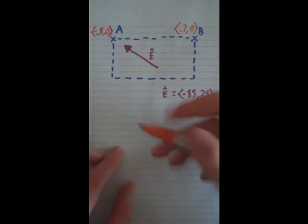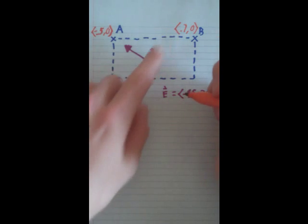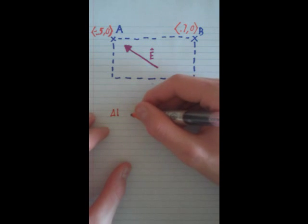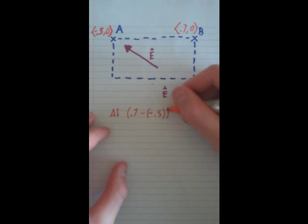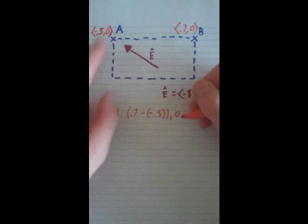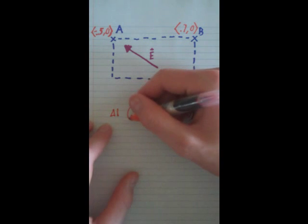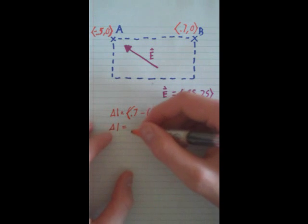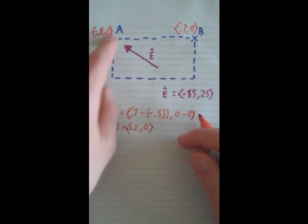We just generally start it in the same way. We find our delta L, B minus A, which is going to be 0.7 minus negative 0.5 times 0, or 0 minus 0. So our delta L will equal this time 1.2 and 0 for how far we're going.